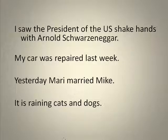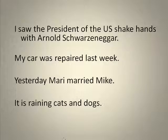We also often tell students that the subject is really the most important part of the sentence, and we come across a sentence like 'it's raining cats and dogs.' 'It' is the subject — it's definitely not the most important part of the sentence, and in fact it doesn't have any meaning at all. It's basically just a placeholder for the subject.